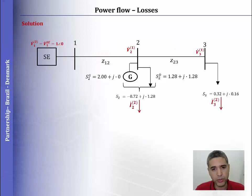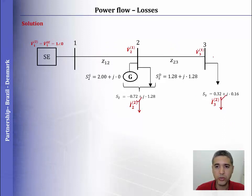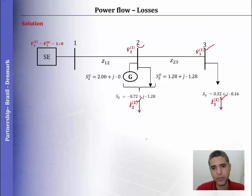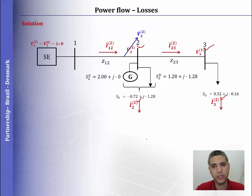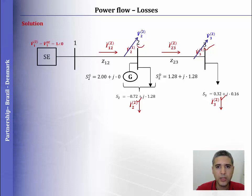We did not achieve convergence, so we need to continue the process by going back to step 2. In step 2, we compute the current for the next iteration using the voltage from the previous iteration. Then we compute the current through the lines, and finally compute the voltage at bus 2 and bus 3.